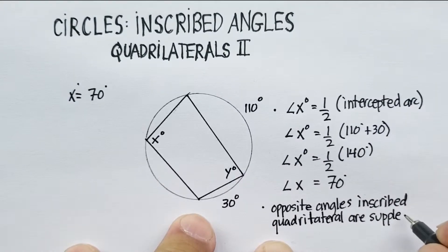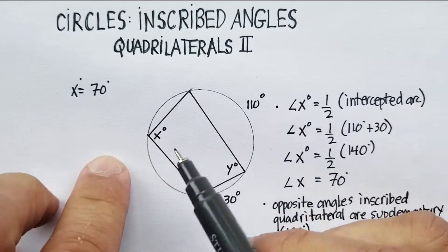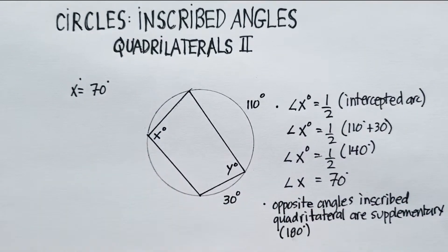Now, remember that supplementary means they're equal to 180 degrees. So we know that angle X plus angle Y should be equal to 180 degrees. We can just substitute, knowing that angle X is 70 plus Y equals 180. Therefore, Y is equal to 110 degrees.